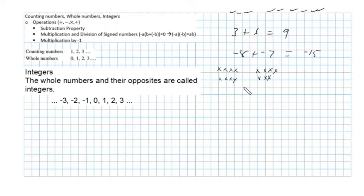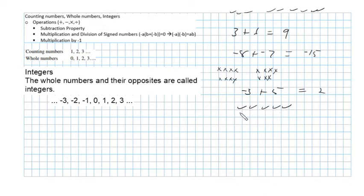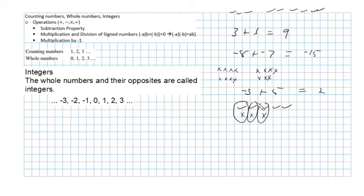Let's take a look at another situation. Suppose I have minus 3 plus 5 — you know that's going to be 2. I have 5 check marks and 3 x's. Each pair of a check mark and an x makes a zero, because a number and its opposite sum to zero: 3 plus negative 3 is 0. That leaves me with just 2 check marks, so the answer is 2.